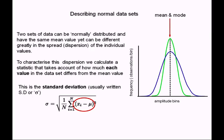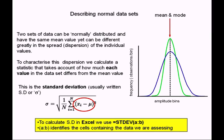That statistic is called the standard deviation. You can calculate standard deviation very easily in Excel using the formula =STDEV(A:B), where A to B inside the brackets describes the array of cells containing the data.